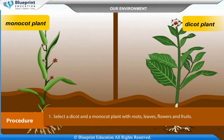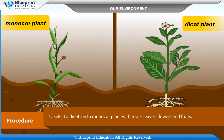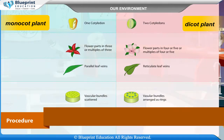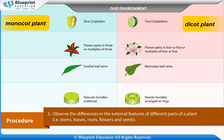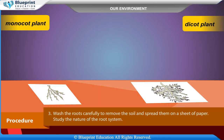Procedure: Select a dicot and a monocot plant with roots, leaves, flowers, and fruits. Observe the differences in the external features of different parts of the plant — that is, stems, leaves, fruits, flowers, and seeds. Wash the roots carefully to remove the soil and spread them on a sheet of paper. Study the nature of the root system.